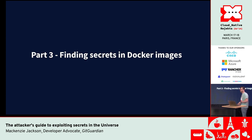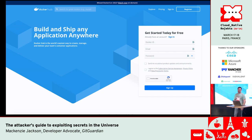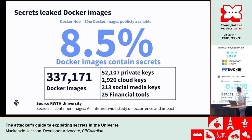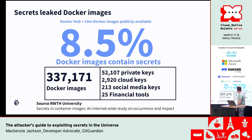We've also got lots of secrets in different places like containers. Just like GitHub, we have Docker Hub — the largest place to store Docker images, with more than 10 million publicly available images. Recent research by RWTH University found that 8.5% of Docker images contained at least one plain text secret. They did 337,000 Docker images and found 52,000 private keys and 2,900 cloud keys. They even connected the private keys to public keys to see which ones are real and what they gave access to.